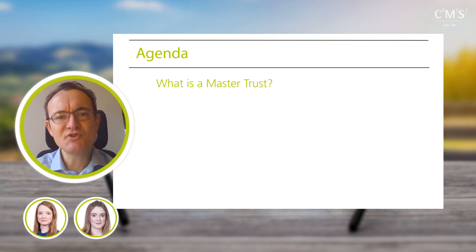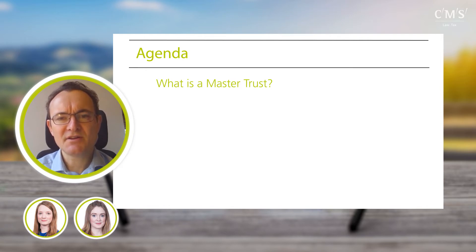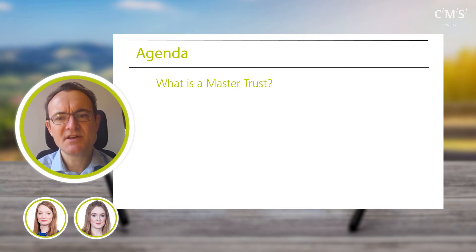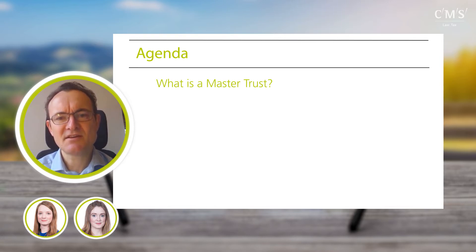There are three broad groups of master trusts in the market today. First, auto-enrolment providers offering compliance for the mass market — for employers needing a scheme to meet auto-enrolment requirements, focusing on new contributions for existing employees. The second group, which we're mostly looking at today, is consolidators: master trusts taking transfers from existing defined contribution schemes and building scale to offer better value for money to members and employers.